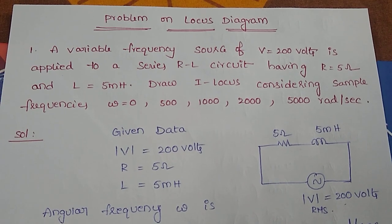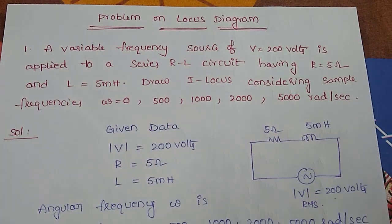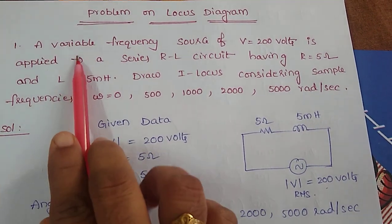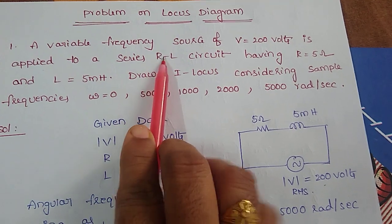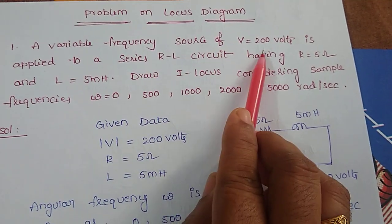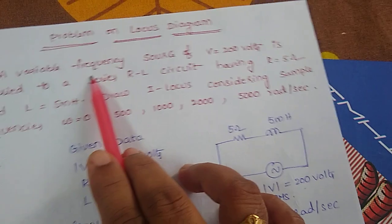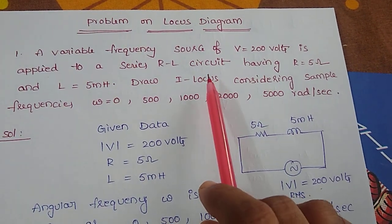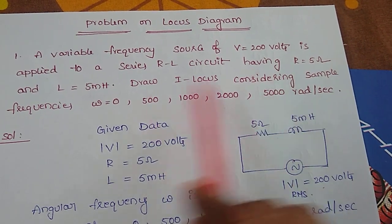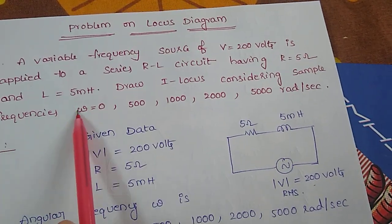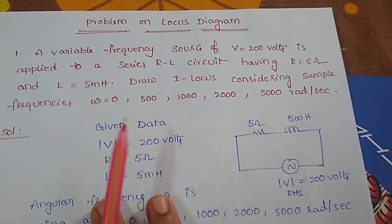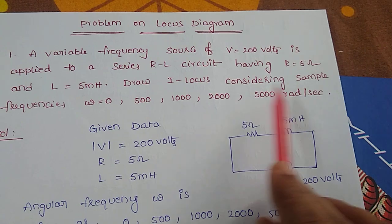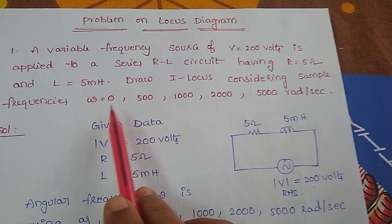Hi, good morning students. Now I am going to explain a problem on the locus diagram concept. Here I have taken this problem as a variable frequency source of RMS value V of 200 volts is applied to a series circuit of R and L.